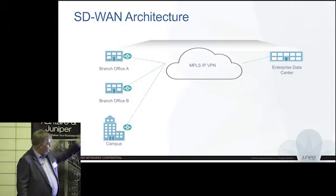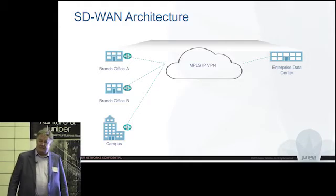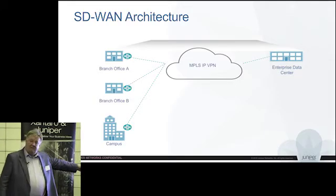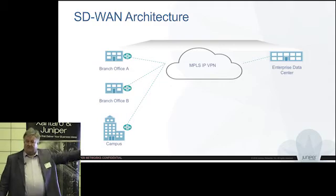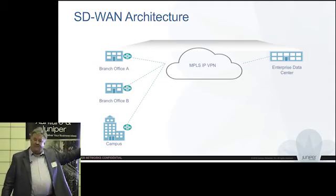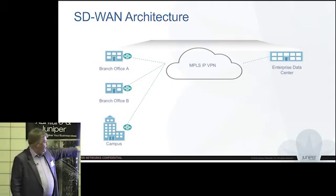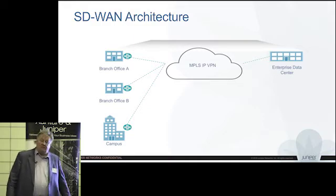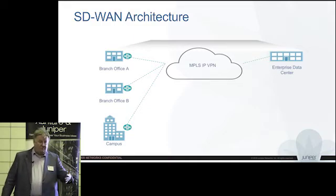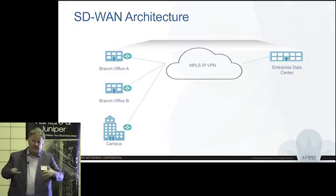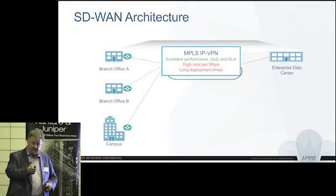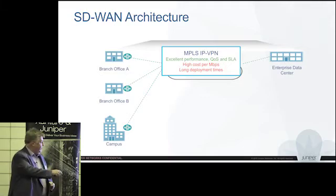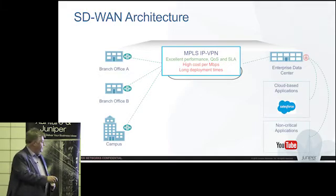Most have some form of central breakout to the internet in the way they're designed — you don't normally see much internet breakout at the branch. Most centralize that, so you're trunking a whole load of internet-bound traffic across an expensive VPN network to break out at a central point. A good reason why: central security and central policy control — but it comes at a cost. And that's part of the debate as to why people believe there's a need to see a different approach.